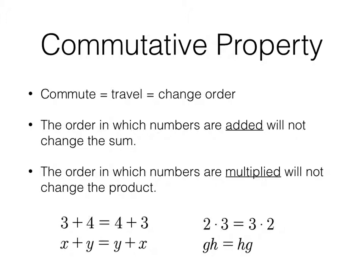In addition to the way that numbers are added not changing the sum, the order in which they are multiplied will not change the product. So here's an example of the commutative property of addition. 3 plus 4 is 4 plus 3. X plus Y is Y plus X. So you have to be able to recognize it in numbers and in variables. And for multiplication, 2 times 3 equals 3 times 2. Or GH equals HG.